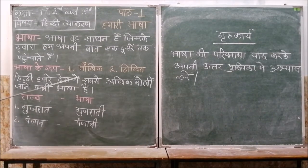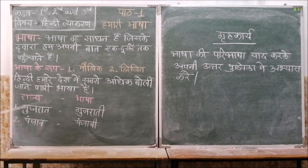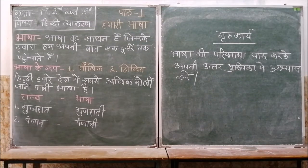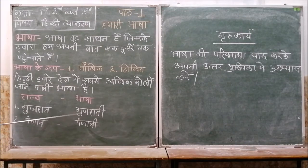Our country has many famous languages. In India, there are different languages that are spoken. For example, in Gujarat, Gujarati is spoken, and in Punjab, Punjabi is spoken.